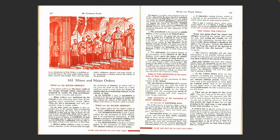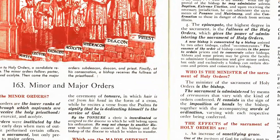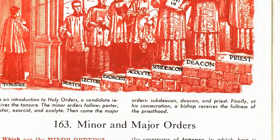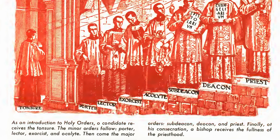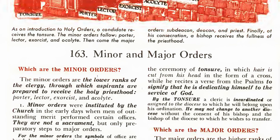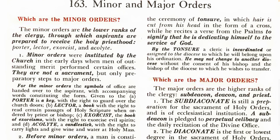My Catholic faith, lesson 163: minor and major orders. As an introduction to holy orders, a candidate receives a tonsure. The minor orders follow: porter, lector, exorcist, and acolyte. Then come the major orders: subdeacon, deacon, and priest. Finally, at his consecration, a bishop receives the fullness of the priesthood.